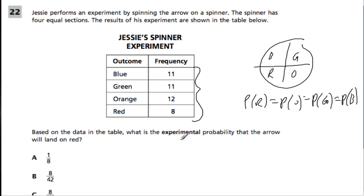So based on the table, what is the experimental probability? Theoretically, everything should be equal. But experimentally, that's not the case.